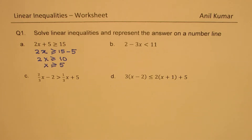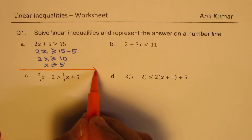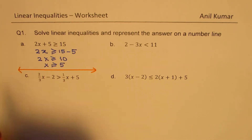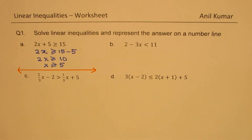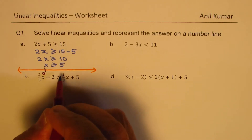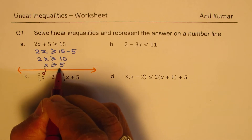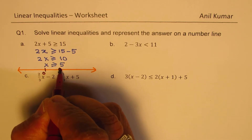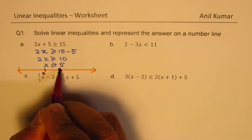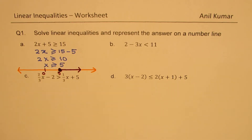To represent the solution on a number line, let us say this is our number line. We want to represent x greater than or equal to 5. Let us say this is 0 and this is 5. Greater than or equal to will be a filled-in circle, so we fill this up and draw the arrow towards the right, showing x greater than or equal to 5.